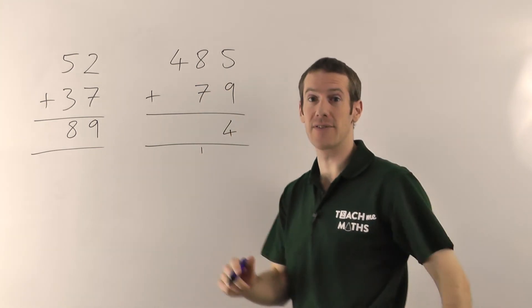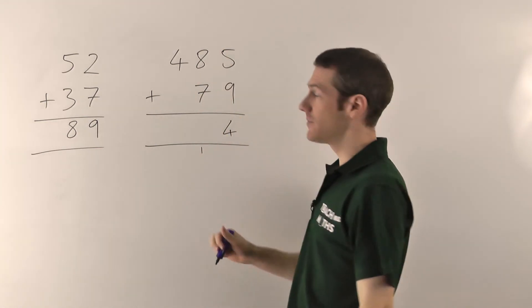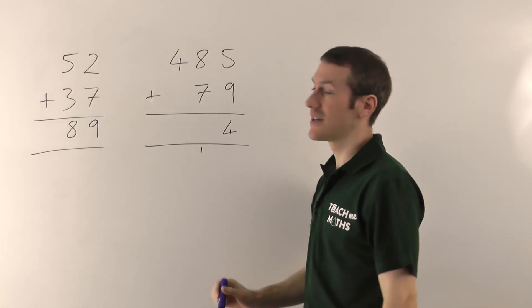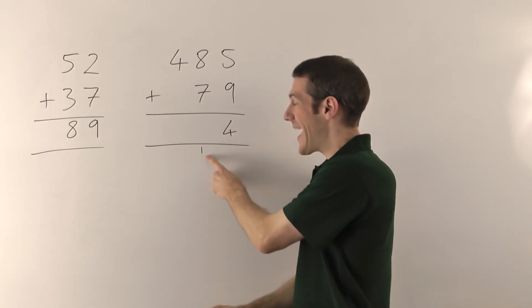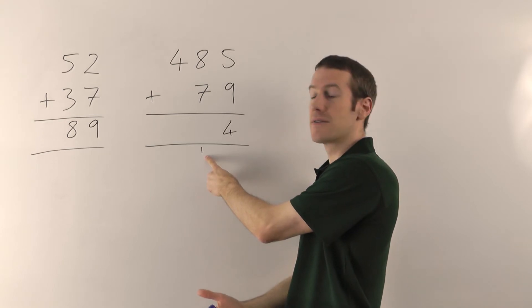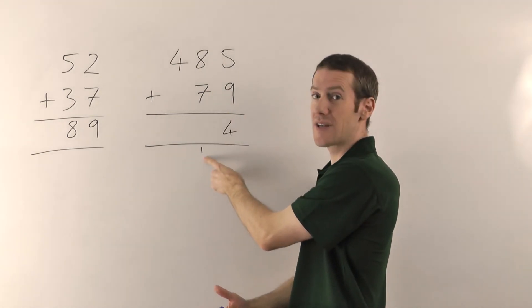It's gone on to the next column, effectively. Then you add up the next column, so 8 plus 7 is 15 and then you have to add anything that you carried. So 15 plus the one you carried gives you 16.